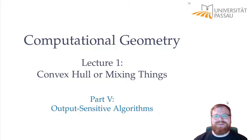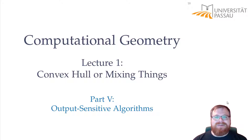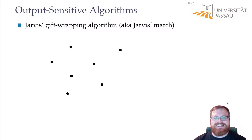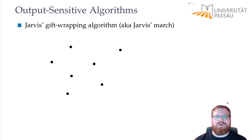In the last part of the lecture, we will talk about output-sensitive algorithms. We will once again talk about another algorithm to find a convex hull in 2D. This algorithm is the Jarvis gift-wrapping algorithm, sometimes also called Jarvis March.